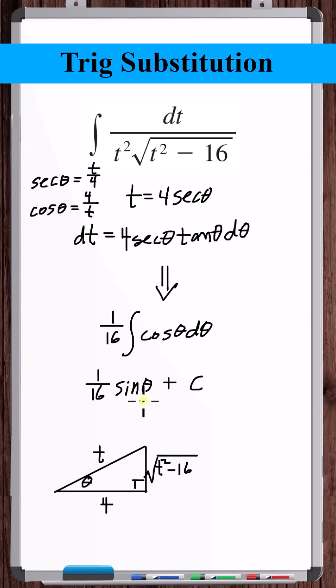Now what we need is sine theta. Sine theta is opposite over hypotenuse. Therefore, converting this, we get opposite over hypotenuse t, but let's put the 16 in the denominator. And that's the final answer.